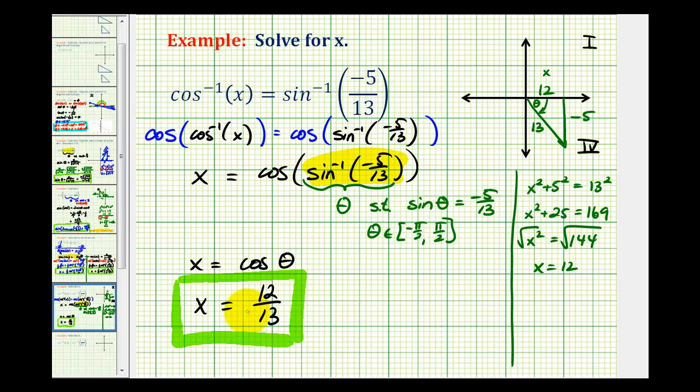The key to solving this type of equation is recognizing that sin⁻¹(-5/13) represents an angle with a sine function value of -5/13, and that the angle must be in this specific interval. Once we do this, we can model the angle and the reference triangle, then solve for x. I hope you found this helpful.